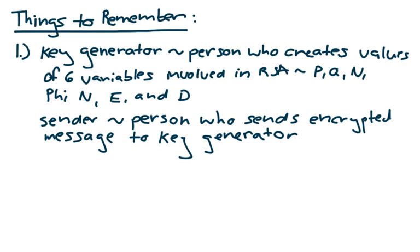The first thing I need you to remember is the difference between the key generator and the sender. The key generator is the person who generates values for the six variables involved in RSA: P, Q, N, Phi N, E, and D. The sender is the person who sends an encrypted message to the key generator for the key generator to decrypt.